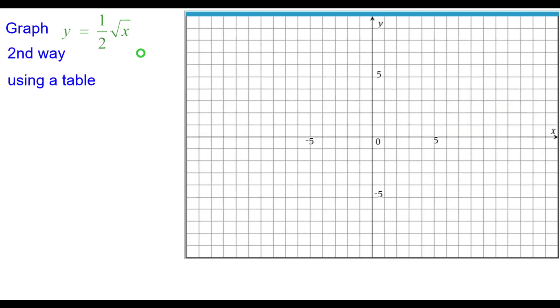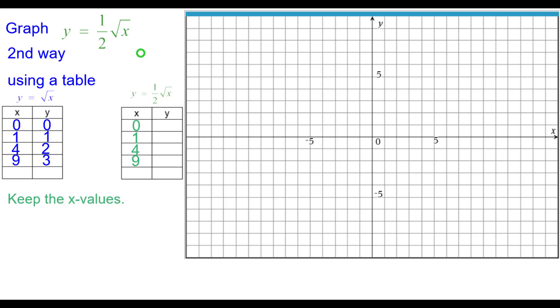Second way is using a table. So this is our traditional table for y equals the square root of x. We're going to keep the x values the same but multiply each y value by 1 half, that coefficient.